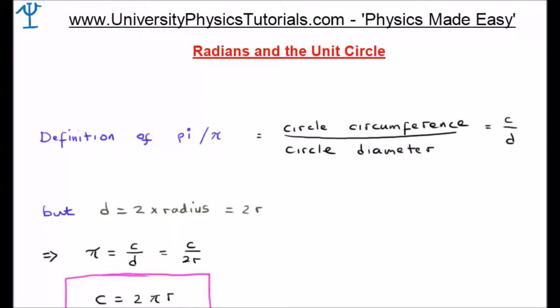We define pi as the ratio of a circle circumference to its diameter. So pi is said to be C over d, the circumference of a circle divided by its diameter.